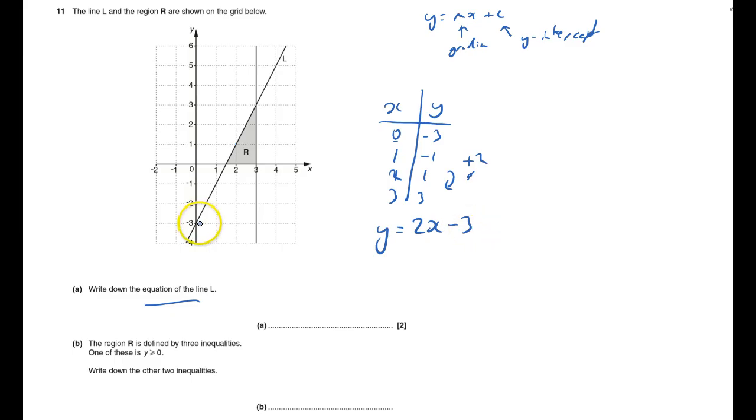But the way to do it is the y equals mx plus c way. It goes across 1. What does it go up by? It goes up by 2. So the gradient is 2. So y equals 2x.